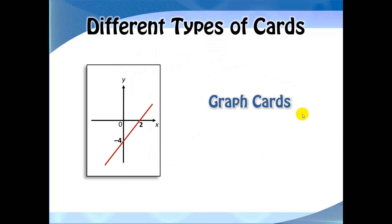The first type of card is called the graph cards. Here you will see a straight line graph.